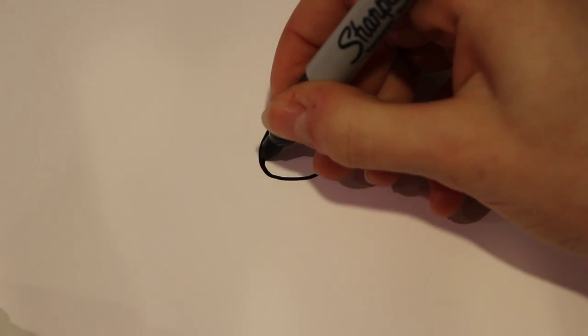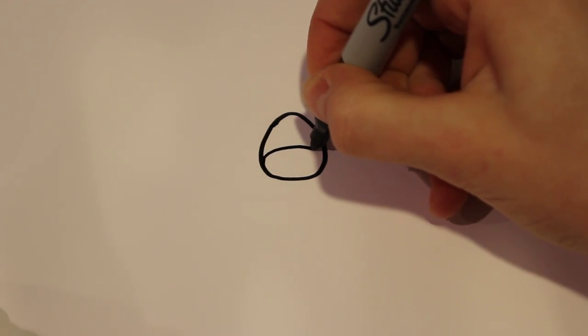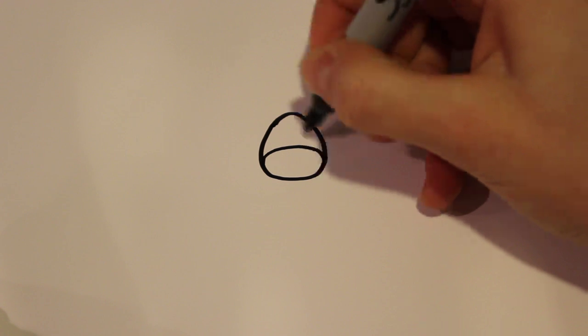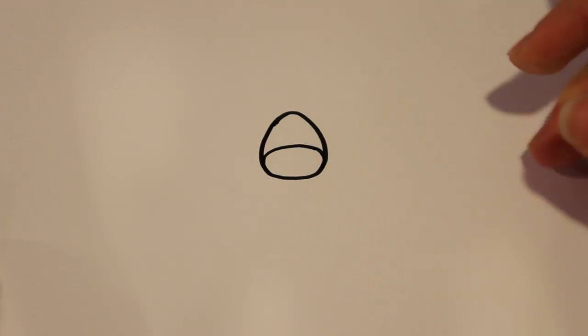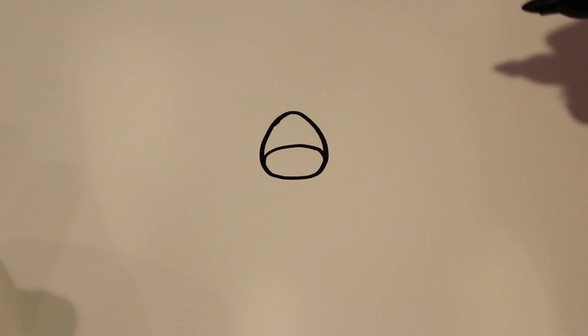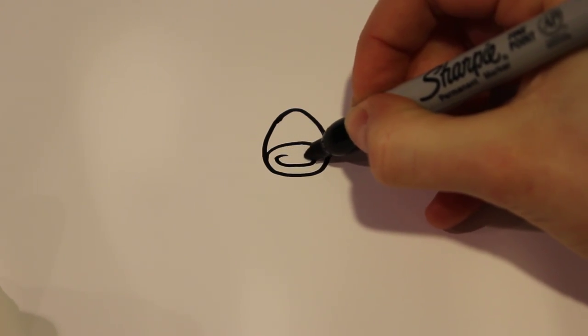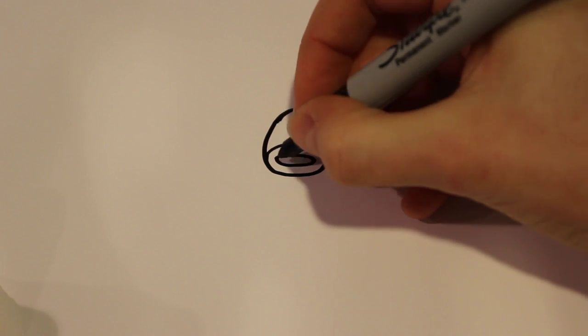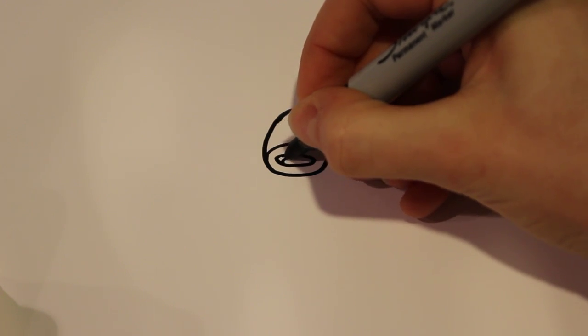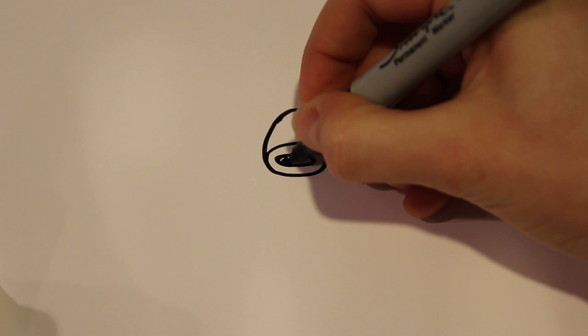From there, taking up about a third of the length, draw a second oval. Then inside that, another oval, and color that in black. If you want, you can leave a little white as a shine mark.